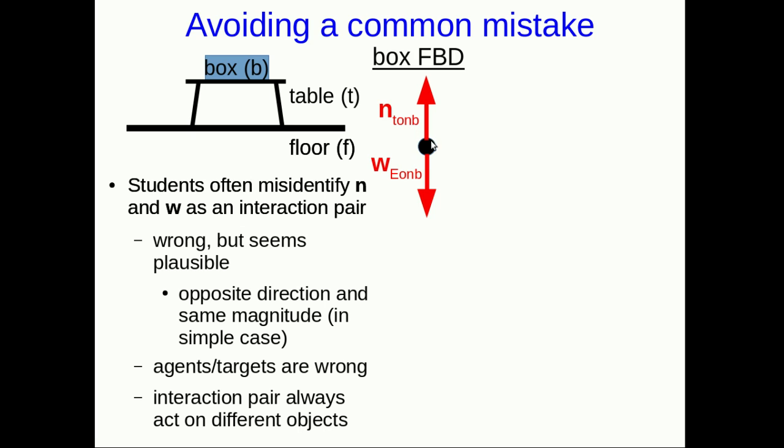And so if we want to find the partner, the other force in the interaction pair with this normal, we have to look at the free body diagram of the table. And now you see that the normal that the table exerts on the box is the interaction partner with the normal that the box exerts on the table.